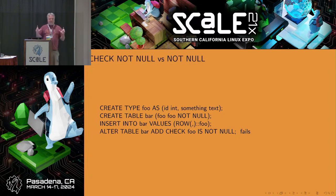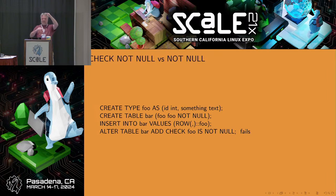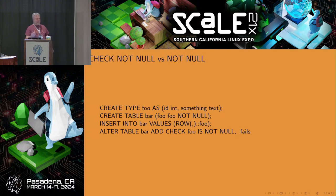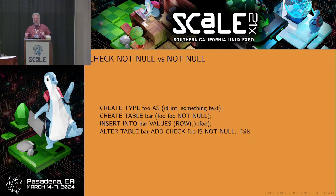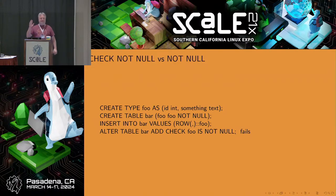Now we INSERT INTO bar a foo type where both values are null. Postgres will happily do this for you. Then we realize we have a problem and do ALTER TABLE bar ADD CHECK foo IS NOT NULL — and we get an error. The check constraint fails because the entry we added is null. How does this work? To understand this, we have to understand how Postgres actually stores nulls in the background.